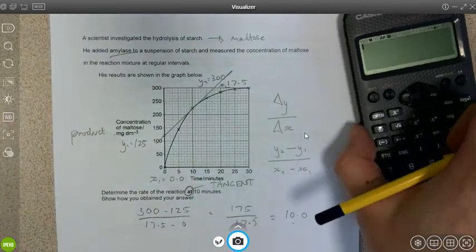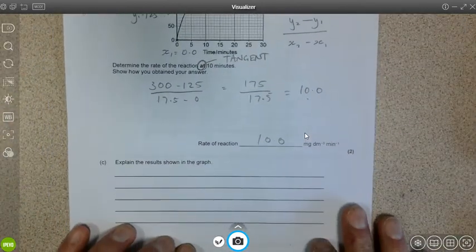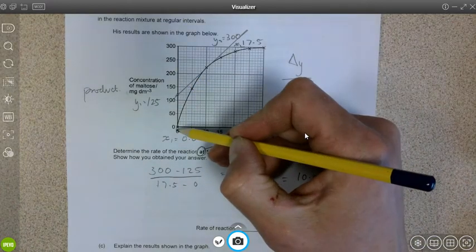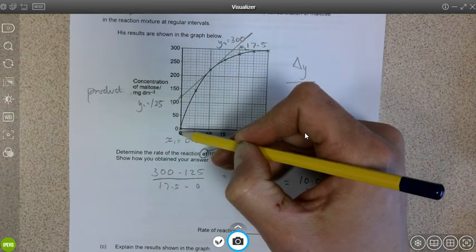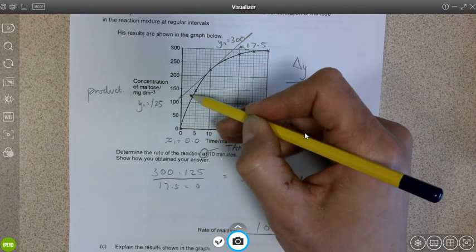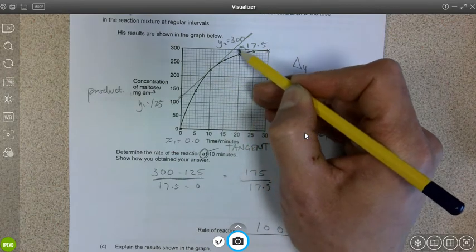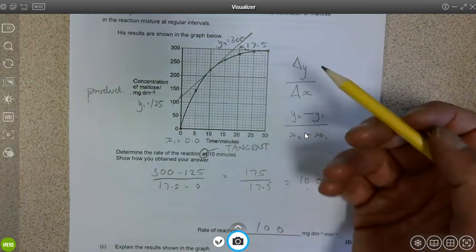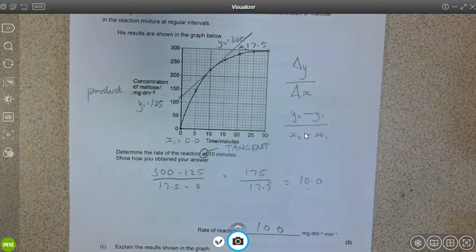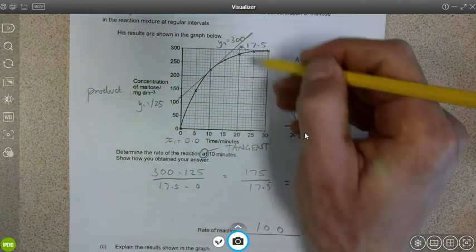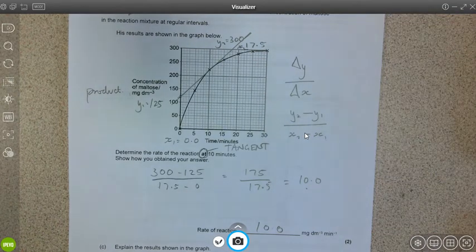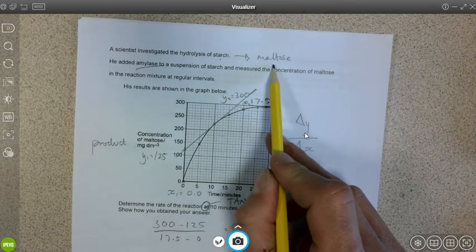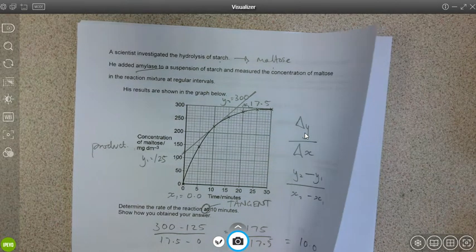Typically these questions will be followed with an explanation of the results shown in the graph. In this graph we can see that the increase in, or the rate of increase in, that glucose being produced slows as the substrate or as the starch is hydrolyzed or used up. Eventually we'll reach a point when the curve plateaus completely, so perhaps after 25 minutes we could say it's plateaued, and that is because all of the starch has been hydrolyzed down into maltose.